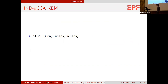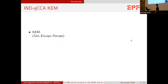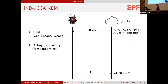A brief reminder of what a KEM is: it's a tuple of three algorithms, GEN, CAPS, and D-CAPS. GEN outputs a public key and a secret key. CAPS takes the public key and outputs a key and a ciphertext. D-CAPS takes the secret key and a ciphertext and outputs the key. Now we want to define IND-QCCA security using a distinguishing game where the adversary receives a challenge ciphertext and a key, which is either sampled at random or is a real key encapsulated into the challenge ciphertext.